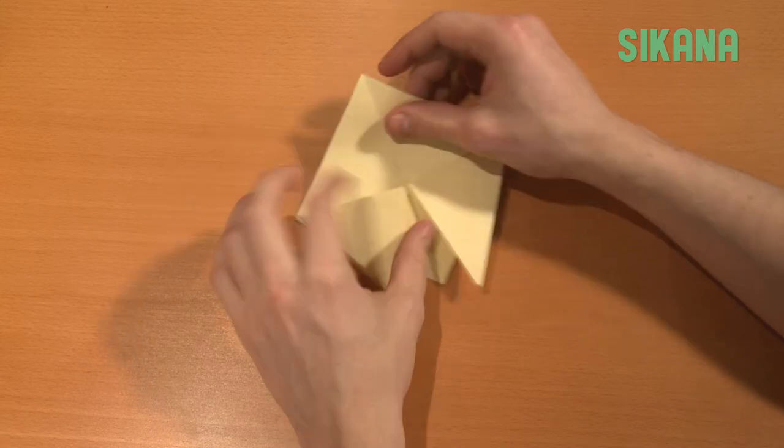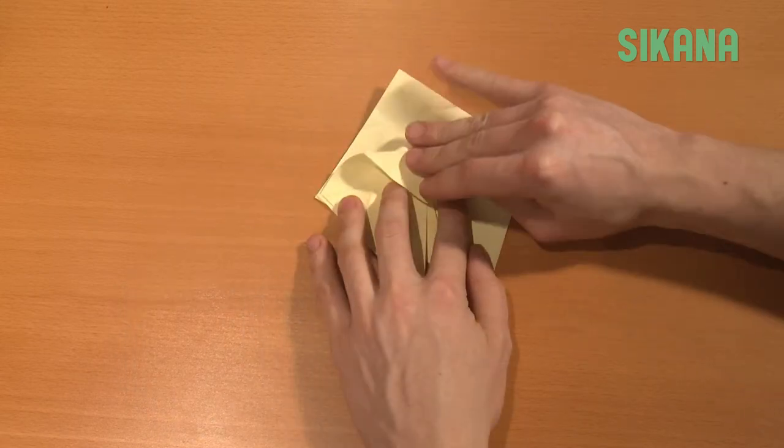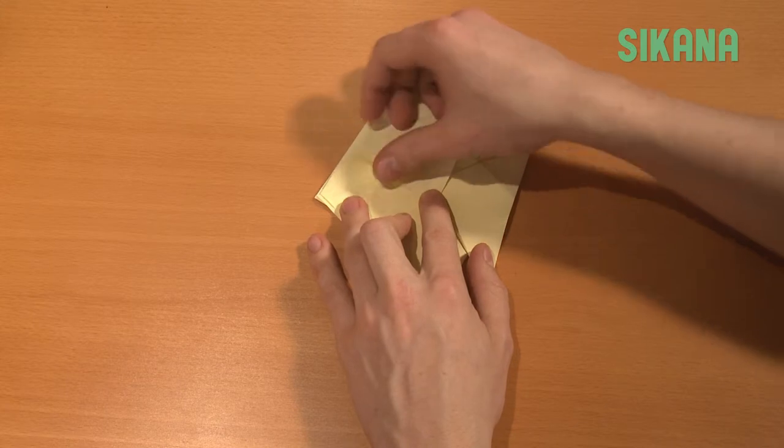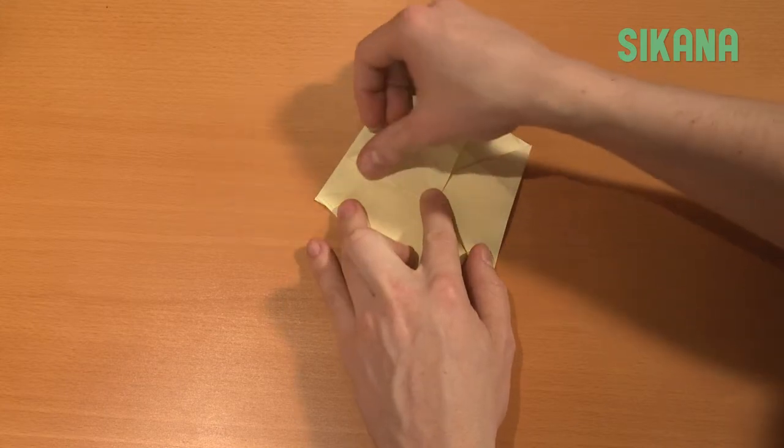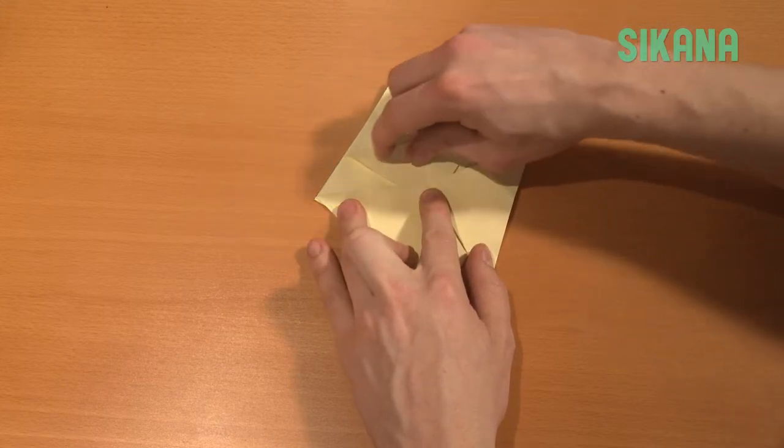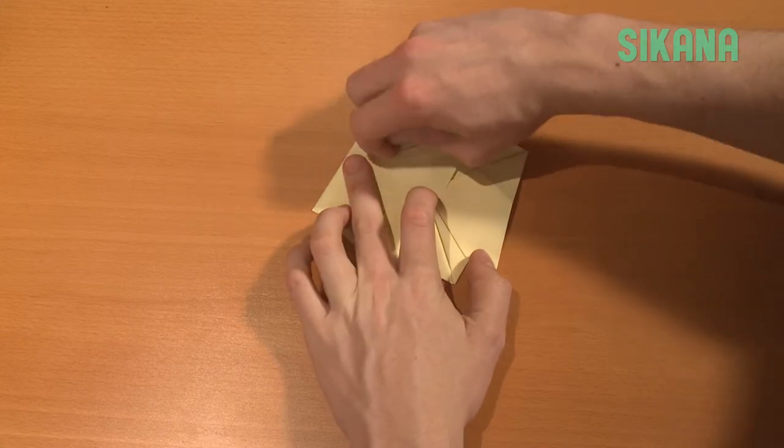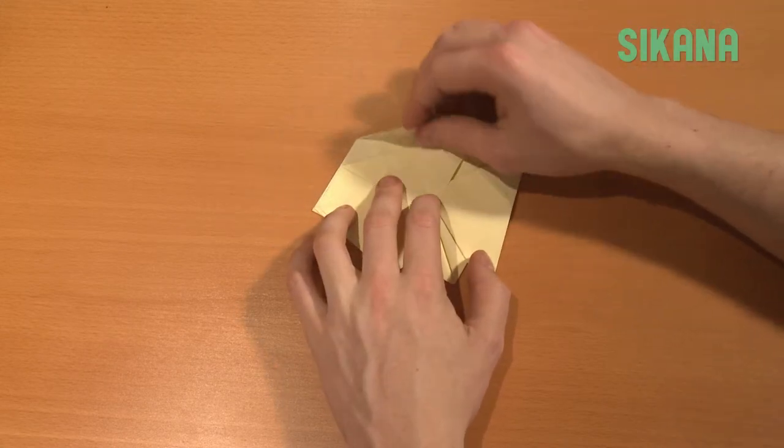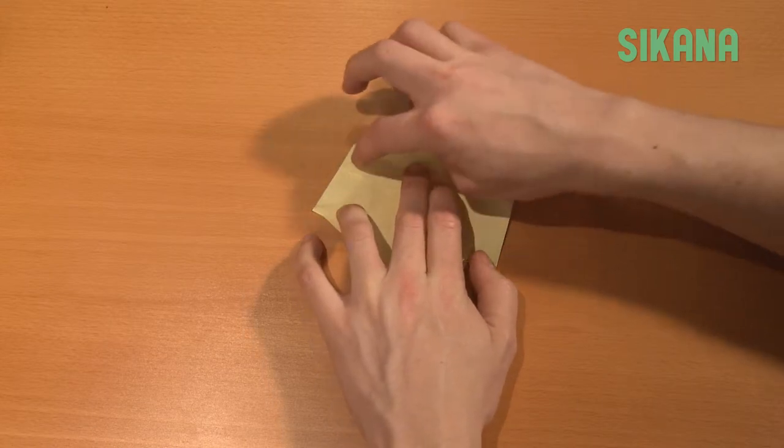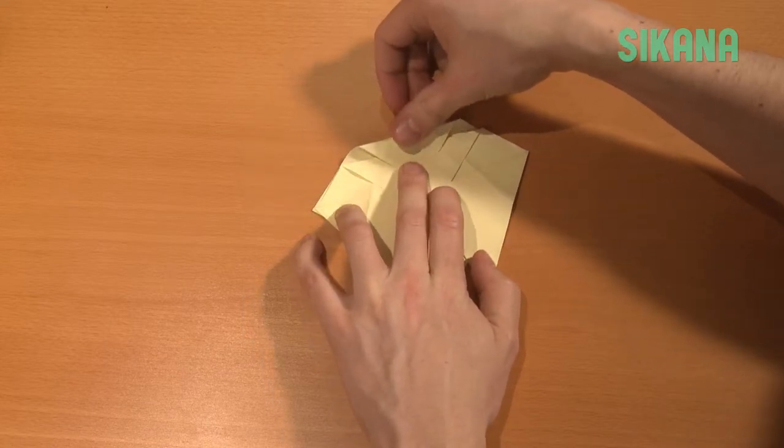Taking only one leaf, fold this point below the horizontal center line while following along the vertical center line like this. Repeat this a second time, but fold this part slightly above, leaving a little space between the two.